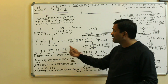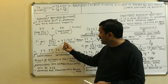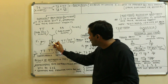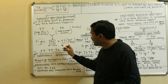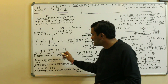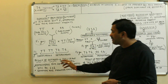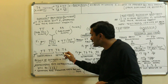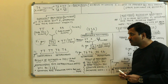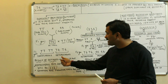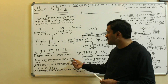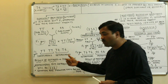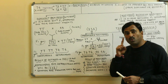When this F1 generation is crossed by the dominant parent capital T capital T, such a cross is called the out cross. In the F2 generation we get capital T capital T, capital T capital T, capital T capital T, and capital T small t — meaning both homozygous and heterozygous individuals are present in a 1:1 ratio. The result of the out cross is that 100% of plants in the F2 generation are tall.